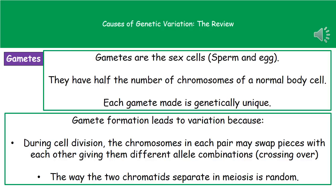The second mechanism during gamete formation is that the way in which the two chromatids separate during meiosis is completely random. So even though we start with the same chromosomes in the normal body cell used to make the gametes, dependent on the crossing over that occurs and how the chromatids separate in meiosis, we end up with genetically unique gametes.